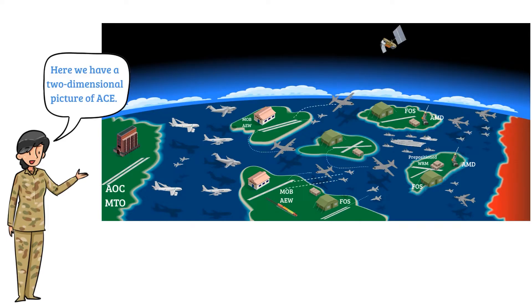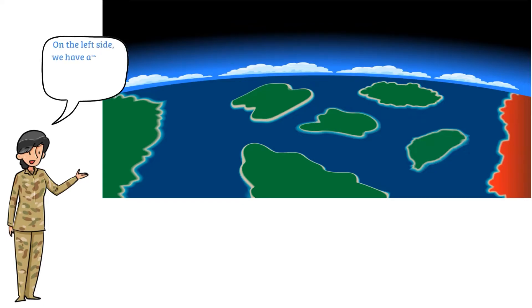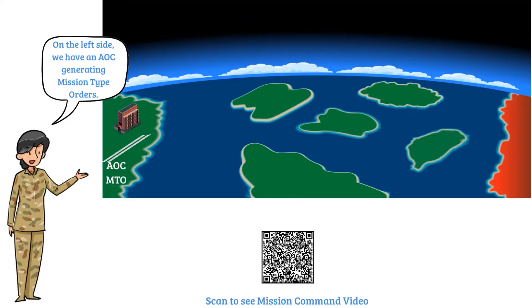Let's go over the big picture. This is a busy slide, but we'll cover it left to right and first provide a broad overview of the main components of ACE. On the left side, the Air Operations Center utilizes Mission Command to exercise command and control, such as issuing mission-type orders. For more information, see our Mission Command video.